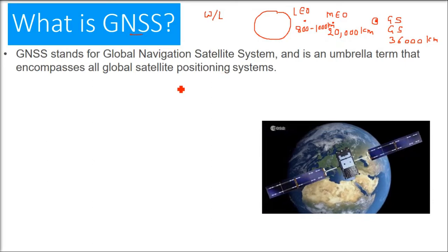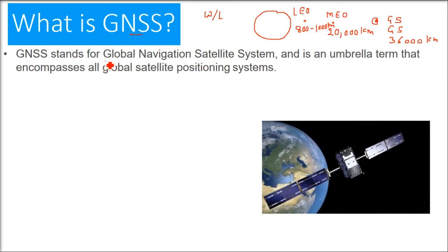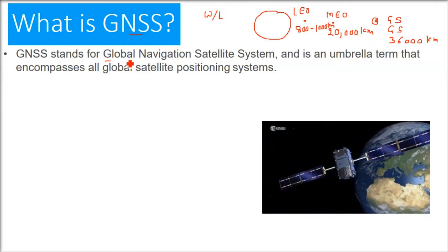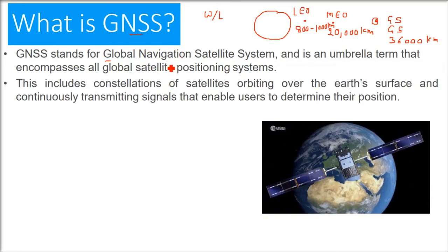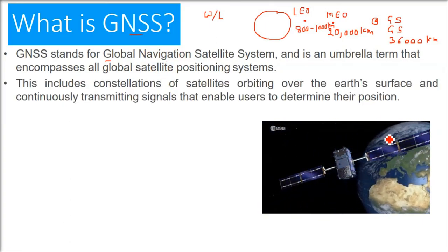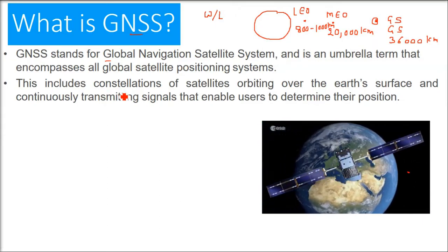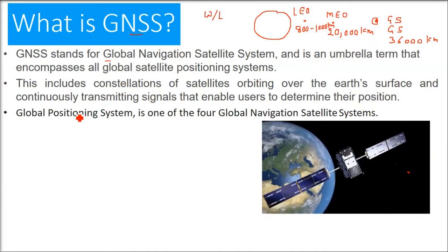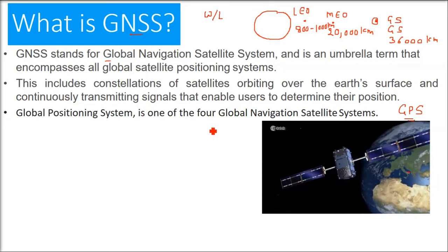GNSS stands for Global Navigation Satellite System - it has to cover the whole Earth, the whole globe. This is an umbrella term that encompasses all GPS systems. This includes constellations of satellites orbiting the Earth's surface, transmitting signals and determining position.